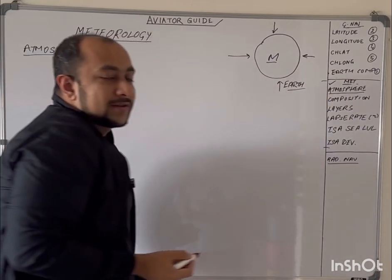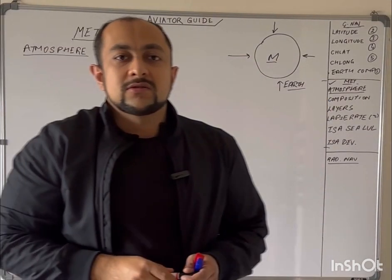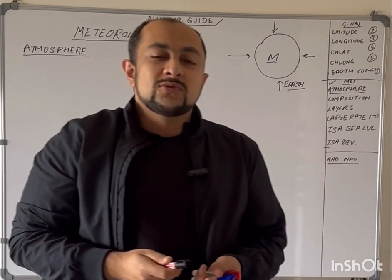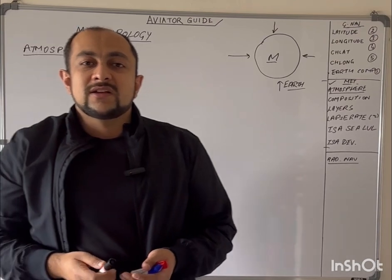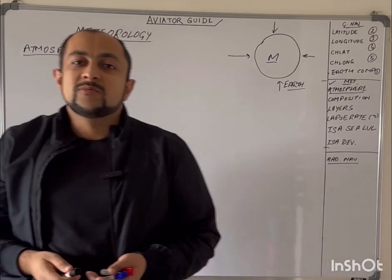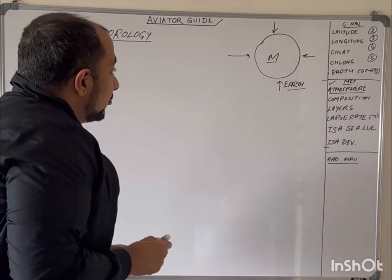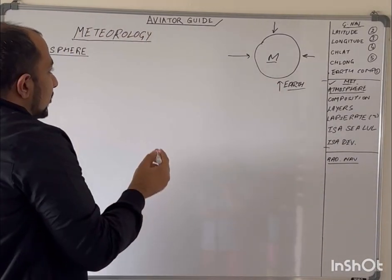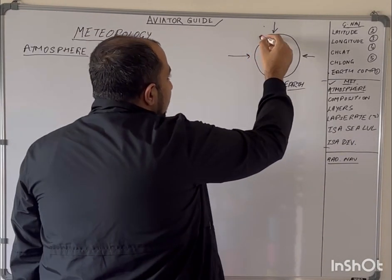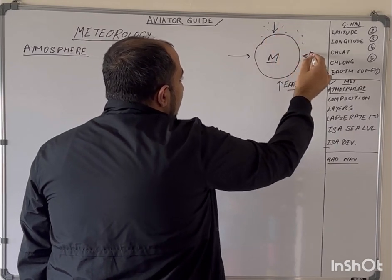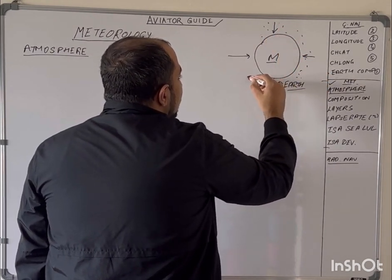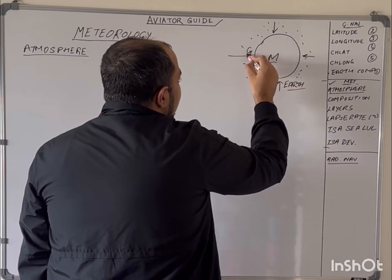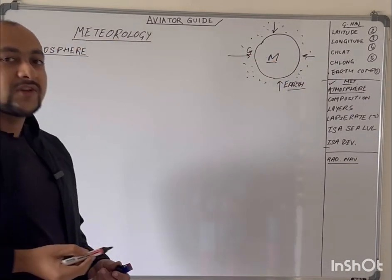There are other planets like Mercury, Venus, Earth, Mars, Jupiter, Saturn, Uranus, Neptune, and Pluto. They all have their own atmospheres with different compositions compared to Earth. Because of Earth's gravity, the air molecules and different types of gases are held around the Earth. All those gases are bound to Earth by the force of gravity, so if gravity were to vanish, the gases would go into space and we would not be able to live on Earth.